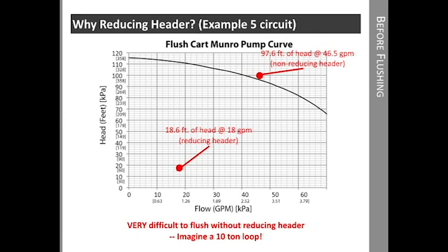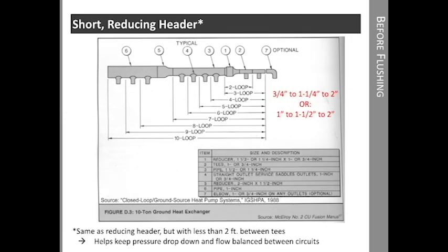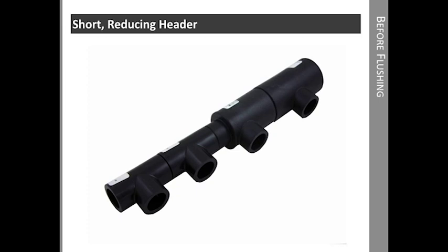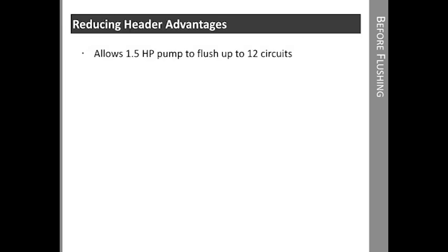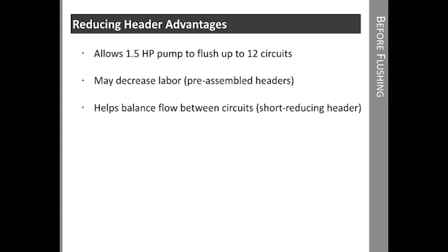A short reducing header is another concept we should discuss. It's still a reducing header, but the distance between T's is less than two feet. This helps keep pressure drop down and also helps maintain balanced flow between circuits. This is a picture of a pre-fabricated short reducing header for a five circuit system. As you can see, the T's are very close together. So even though the last two circuits are three quarter inch, the distance is so short that the pressure drop is negligible. There are some big advantages to a reducing header: we can flush up to 12 three quarter inch circuits with a one and a half horsepower pump. It can really reduce the labor, especially with pre-assembled headers. And it helps balance flow between circuits if we take advantage of the short reducing header.